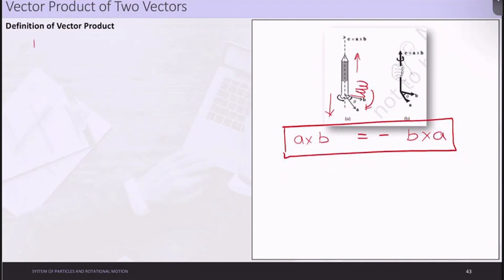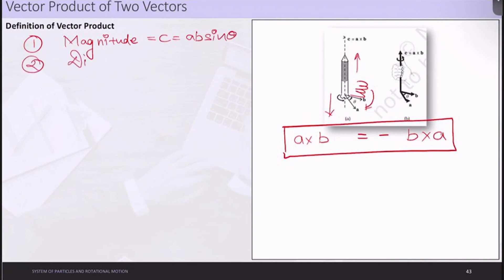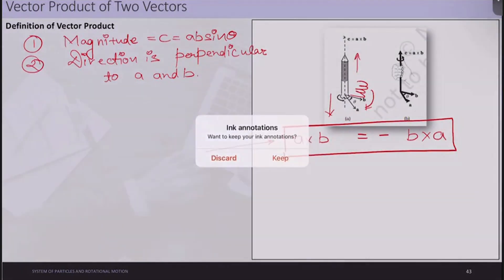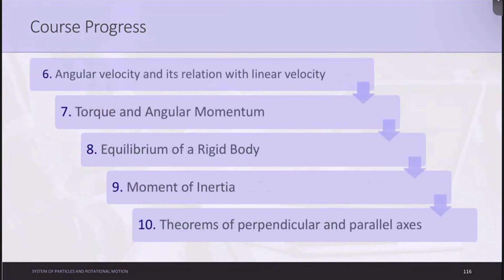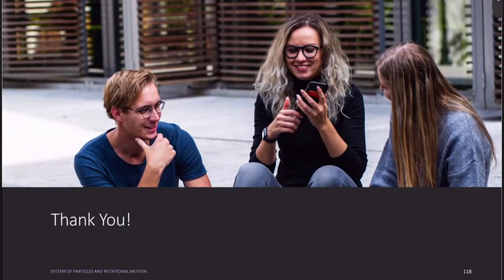To summarize: the magnitude of the vector product C = AB sinθ, and the direction is perpendicular to A and B. One key property is A × B = −(B × A). Our course progress: we have completed introduction, center of mass, motion of center of mass, linear momentum of a system of particles, and are currently understanding the vector product of two vectors, so we can understand moment of force and angular momentum in subsequent lectures. Thank you for this lecture. We will meet again in the next one.